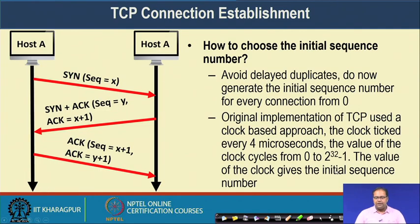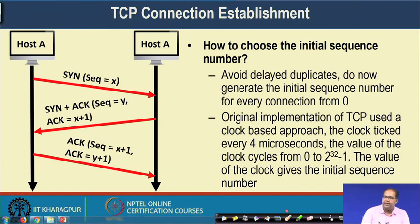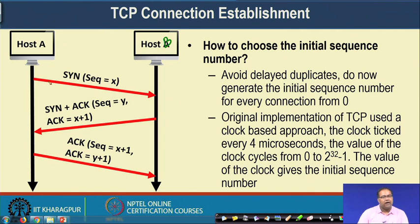TCP connection establishment uses a three-way handshaking mechanism. It utilizes a special connection request message called SYN, short for synchronization — we call it a TCP SYN message. In the three-way handshaking mechanism, host A and host B want to communicate with each other, so host A initiates the connection establishment and sends a SYN message with a certain initial sequence number.